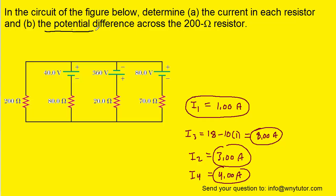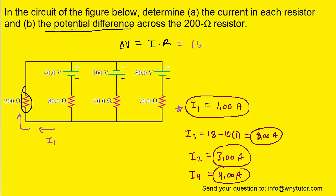Part B is much easier. To get the potential difference across the 200 ohm resistor, we just have to remember that potential difference equals the current flowing through that resistor multiplied by the resistance. We recall from our earlier drawing that the current flowing through the 200 ohm resistor was marked as I1, and we now have the value of I1. Substituting in that value for the current and 200 ohms for the resistance, we can see that the potential difference across that resistor is 200 volts, which is indeed the correct answer to Part B.